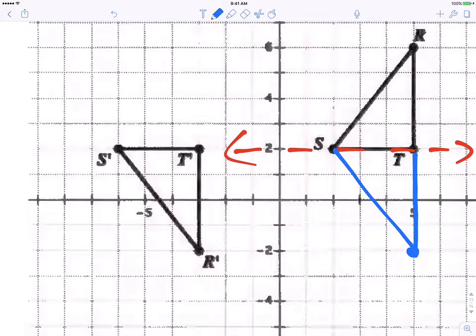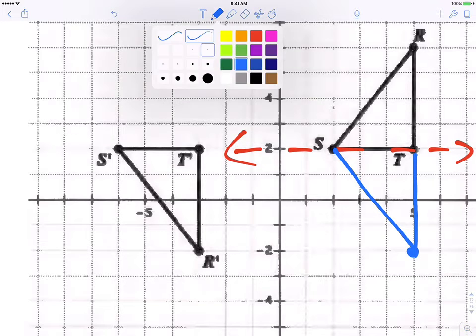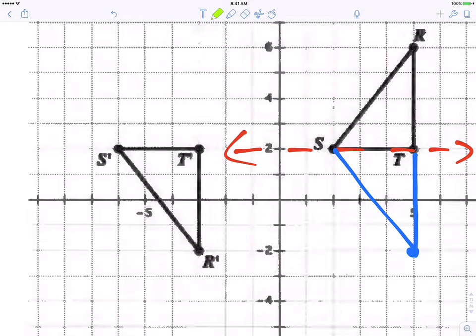And now I'm going to move this triangle using a translation. Now I'm going to move it in this direction. Looks like how many units? One, two, three, four, five, six, seven, eight spots. To the left. And so my new shape is here. See how that works?